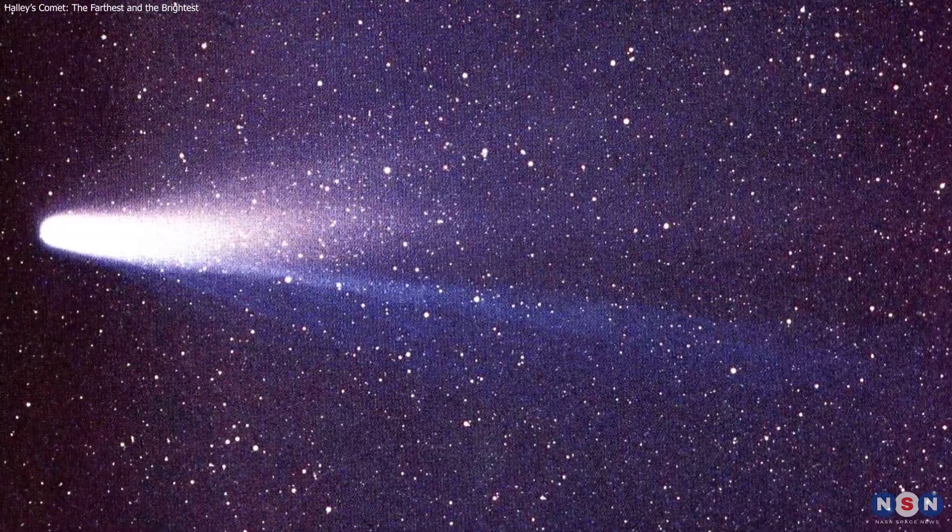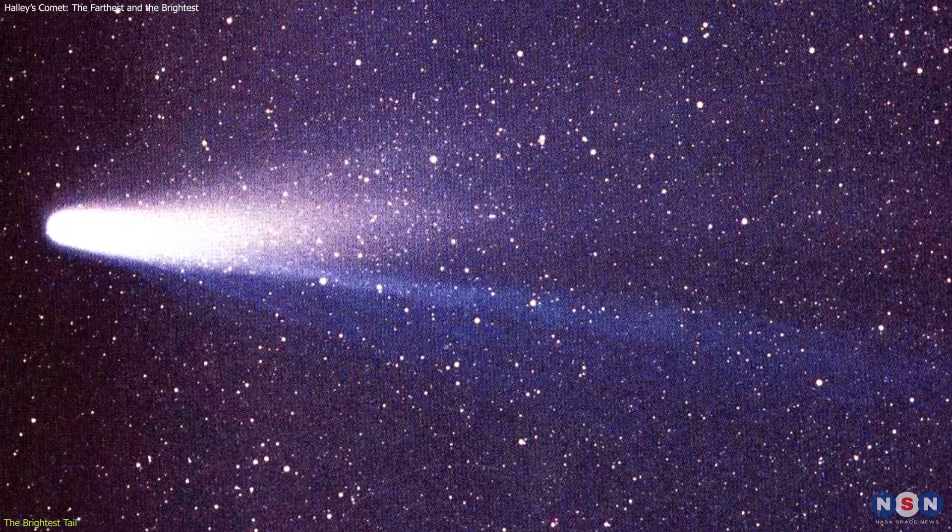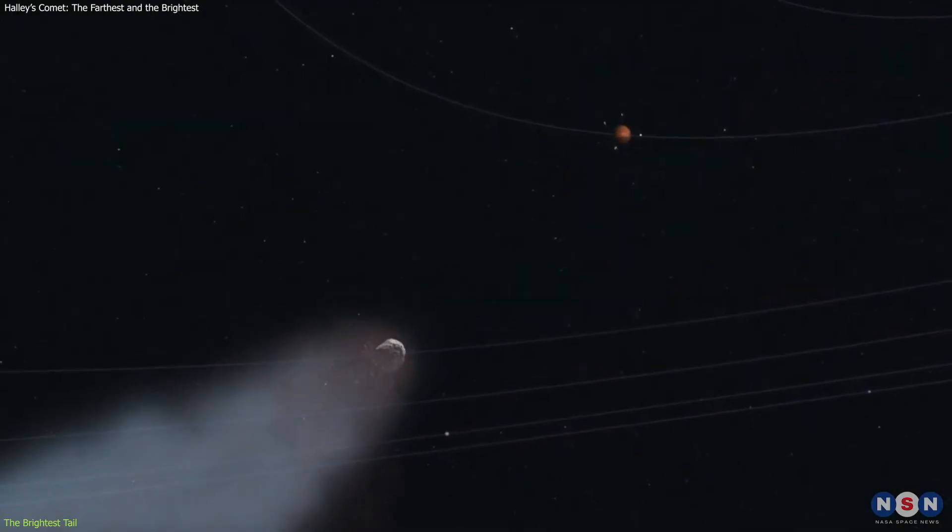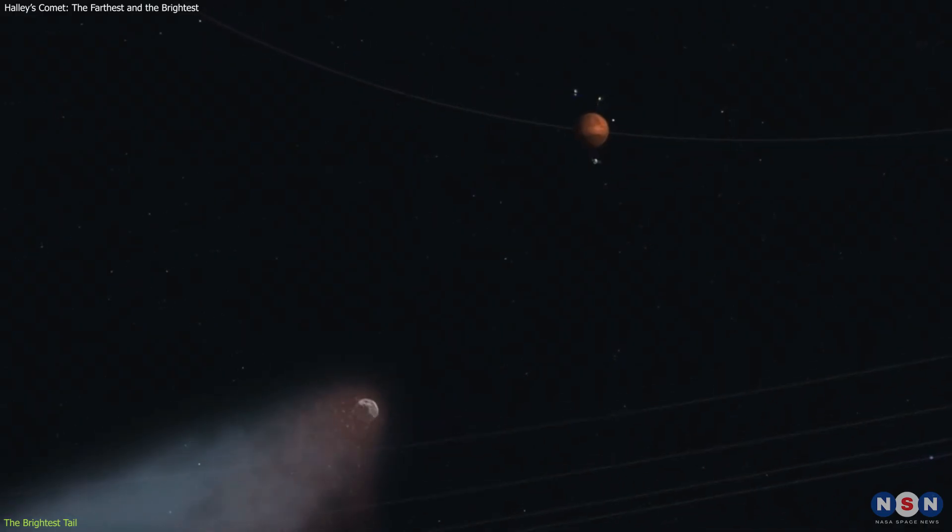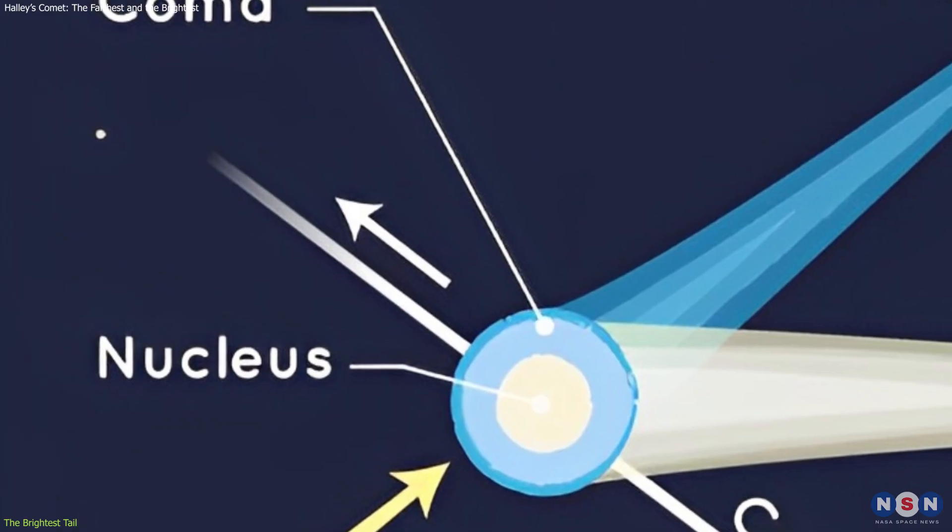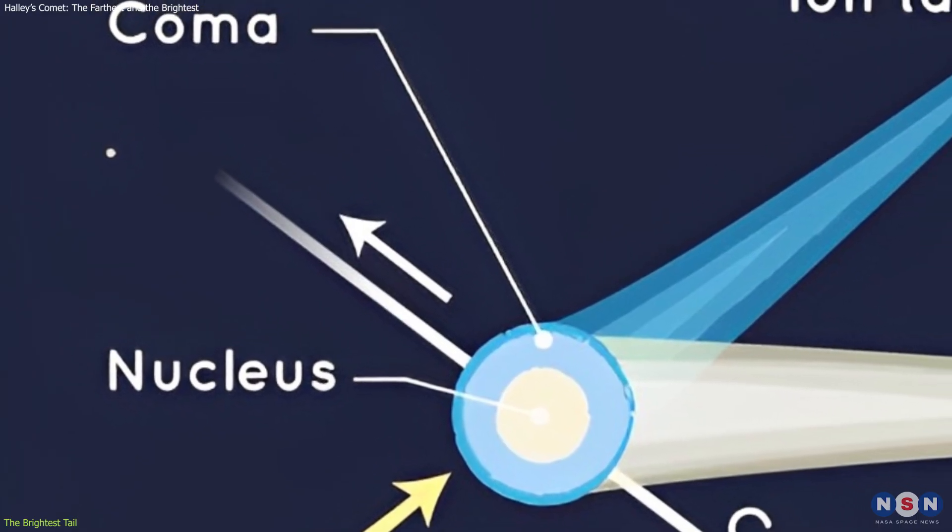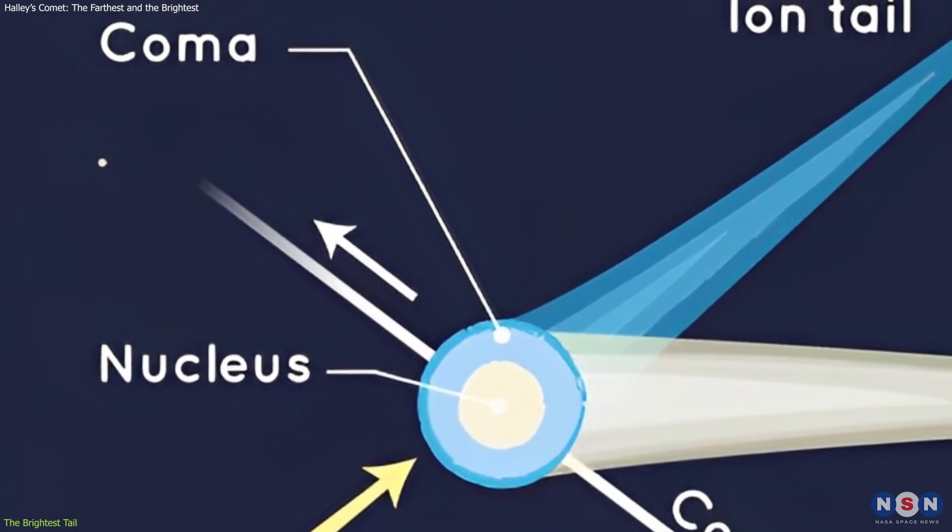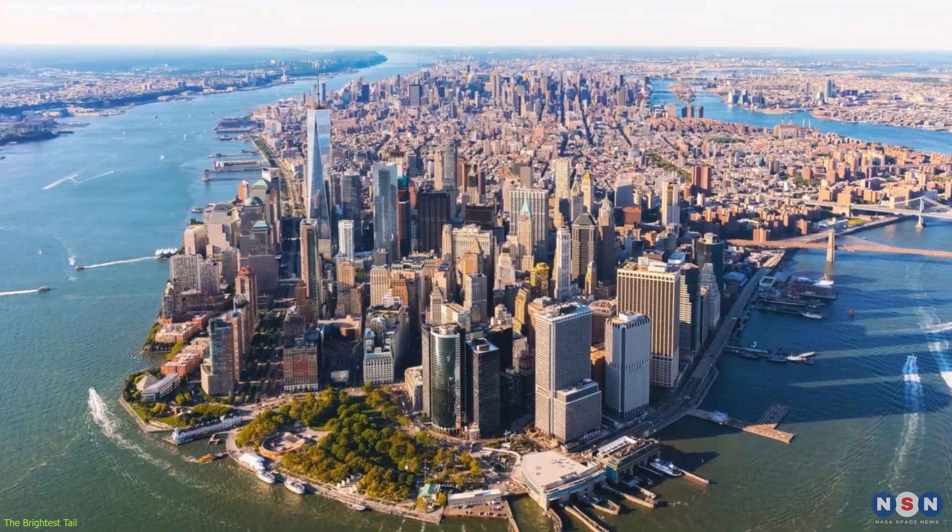The second thing we need to know about Halley's Comet is its size and shape. How big is the comet, and what does it look like? Well, the comet has a nucleus, which is the solid core of ice and rock, and a coma, which is the cloud of gas and dust that surrounds the nucleus. The nucleus of Halley's Comet is about 15 kilometers in diameter, which is roughly the size of Manhattan Island in New York.